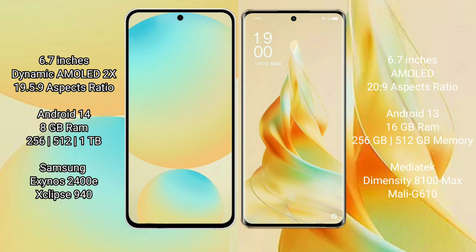The Samsung Galaxy S24 FE is powered by the Samsung Exynos 2400E processor with GPU Mali G940. The Oppo Reno 9 Pro offers 8GB or 16GB RAM with 256GB or 512GB internal storage, and is powered by the MediaTek Dimensity 8100 Max processor with GPU Mali G610.